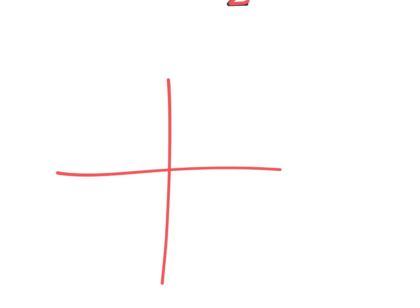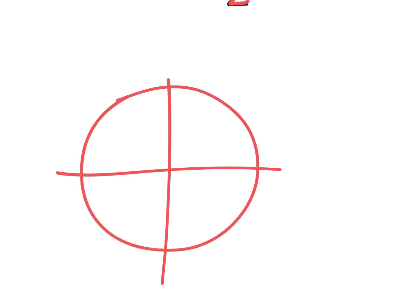All right. So let's do another one. I'd say the pi over sixes are the most important ones. So would you make a circle, and then put on one pi over six? Hint: it's a sixth of the way to pi. And I call it one pi over six, because then you can logically go to two pi over six, et cetera.